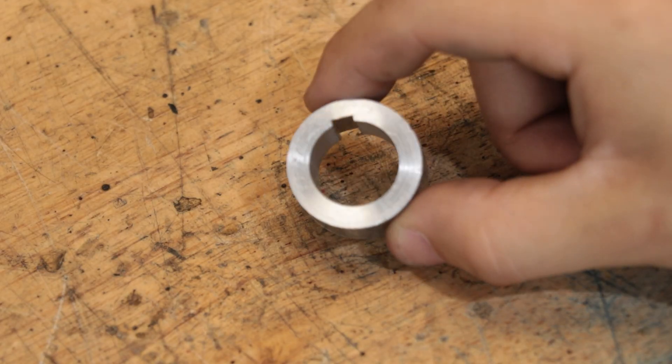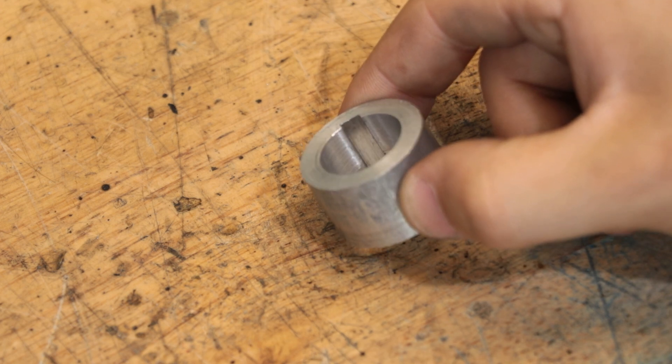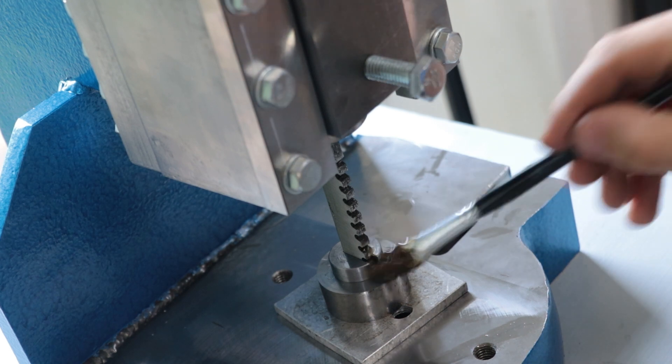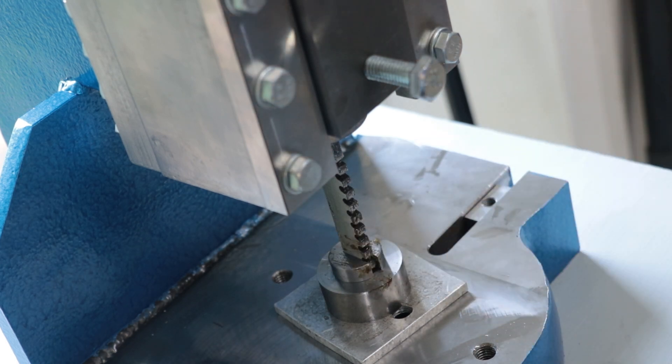The real test though is going to be testing this in steel, and that's going to be a test for both the broach and my press. Now normally for a 5mm broach, I think you'd want a 4 or 5 tonne arbor press, or probably even better, a hydraulic press. So fingers crossed, my press can do this.